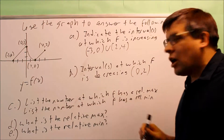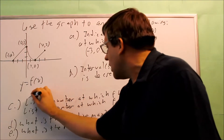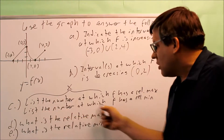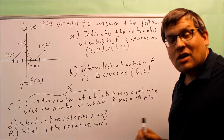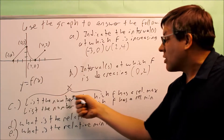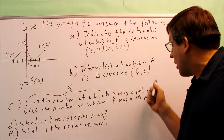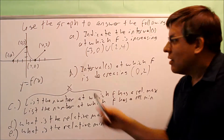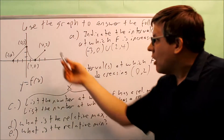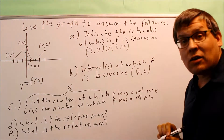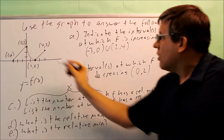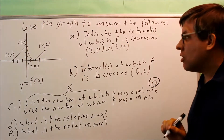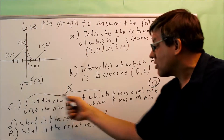Next: list the number at which — this is a phrase you'll see often. 'List the number at which' means it's asking you for an x value. If it asks 'what is the relative max,' that's asking for a y value. So 'list the number at which f has a relative max' is asking for the x value. A relative max occurs when you have an increasing part followed by a decreasing part. The point at (4, 2) is not a relative max because there's no decreasing part after it. The answer is x = 0 — that's where you have a relative max.